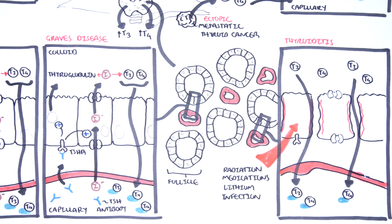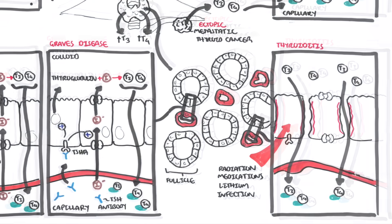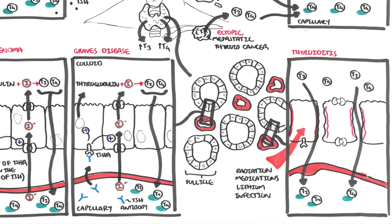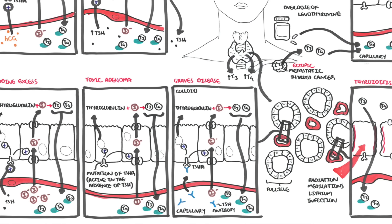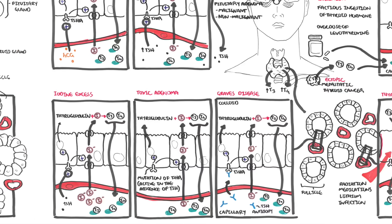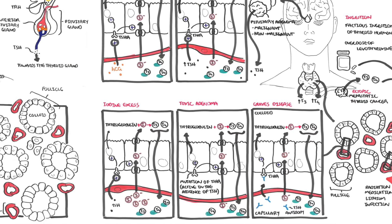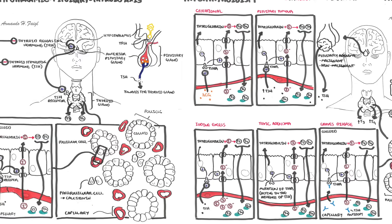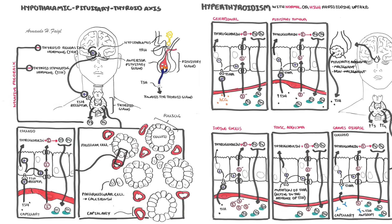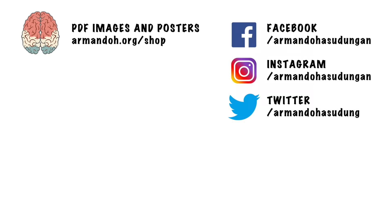So those are the causes of hyperthyroidism. To summarize: hyperthyroidism is where you have excess amounts of T3 and T4 in circulation. It can be divided into hyperthyroidism with normal to high radioiodine uptake — meaning an increase in thyroid hormone synthesis in the thyroid gland — or hyperthyroidism with near-absent radioiodine uptake, meaning there is no synthesis of thyroid hormones from the thyroid gland.